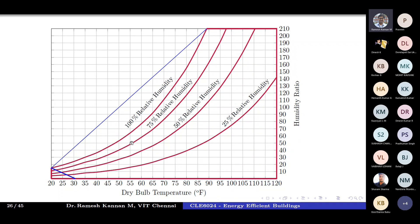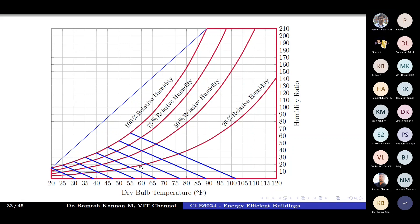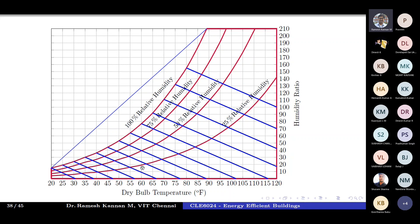Once you construct the first wet bulb line, you draw parallel lines from each subsequent saturation point. For example, for 25°F the vertical line goes up to its saturation point, and the parallel oblique line intersects roughly around 38. You continue this process for all saturation points, generating a series of parallel inclined lines up through 90°F.